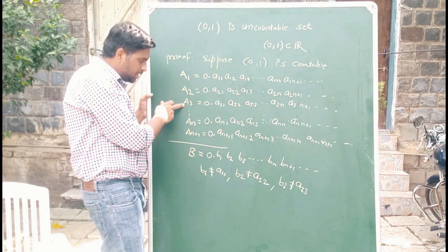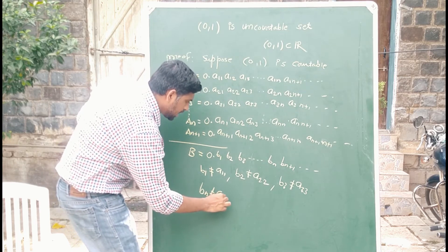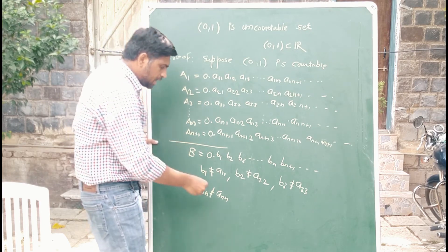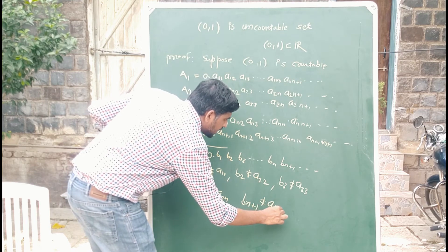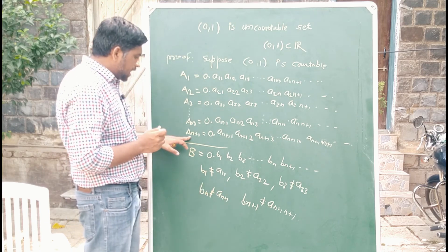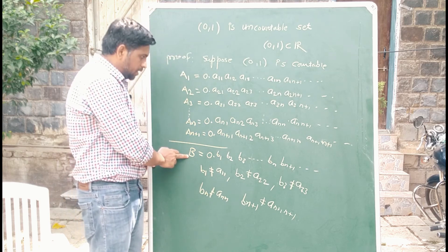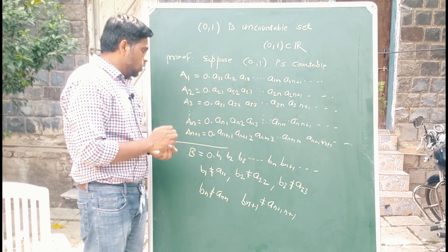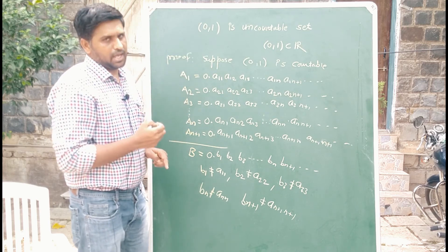In general, bₙ ≠ aₙₙ, so b ≠ aₙ for every n. And bₙ₊₁ ≠ aₙ₊₁,ₙ₊₁ — these are the diagonal elements. So aₙ₊₁ is also not equal to b. Therefore, when we claim we have listed all elements of the open interval (0,1), we find one more element b which is not listed — we have missed one element.